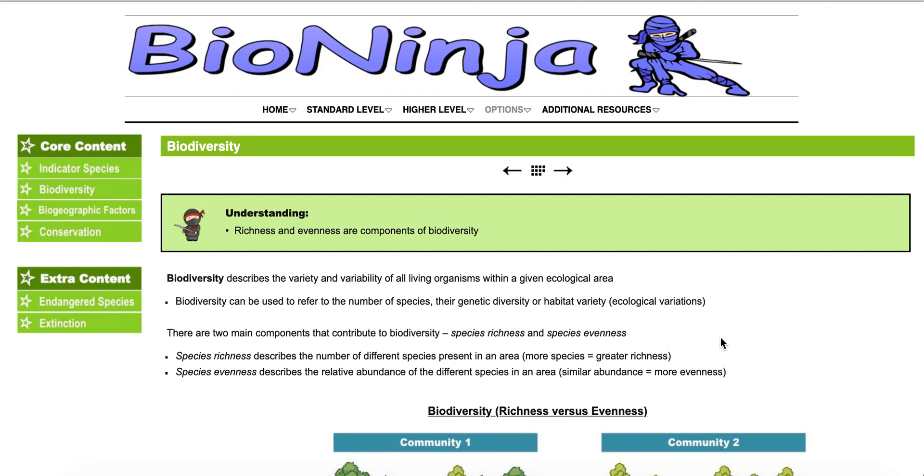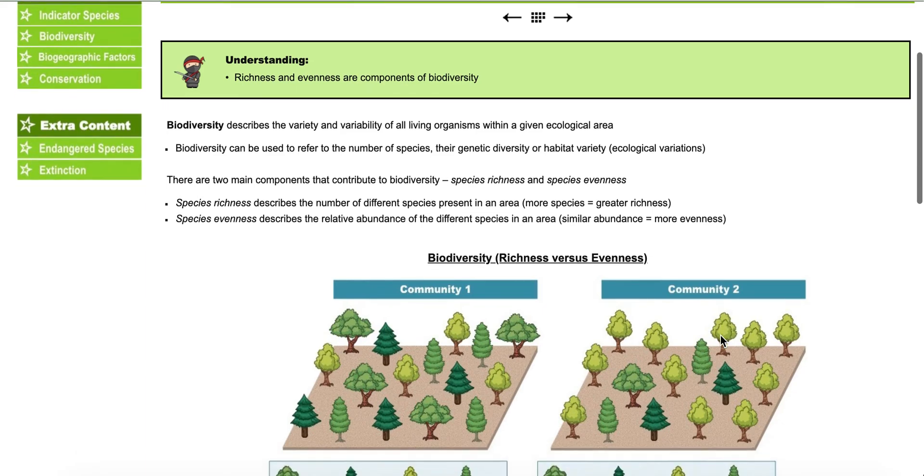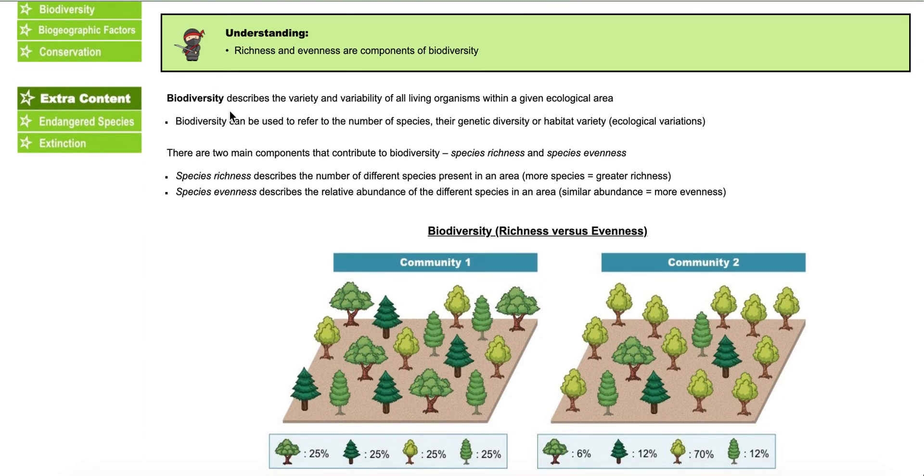So I'm going to use the bio ninja page just like we did with the Chi-Square practice. So to review what biodiversity is, look at the word bio meaning living and then diversity meaning variability. It's the variability of living things in an ecological area.